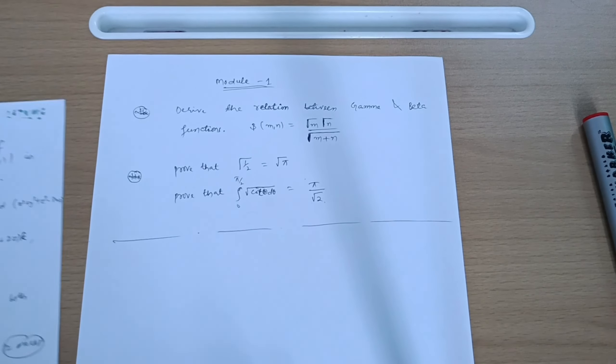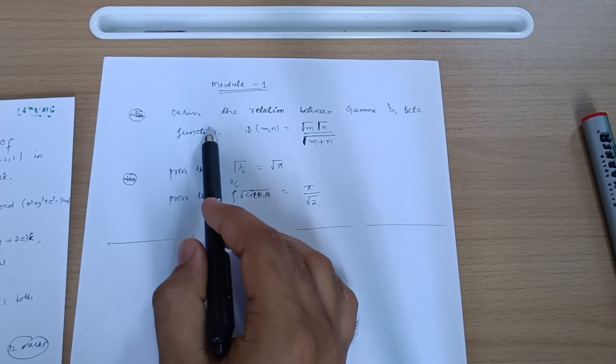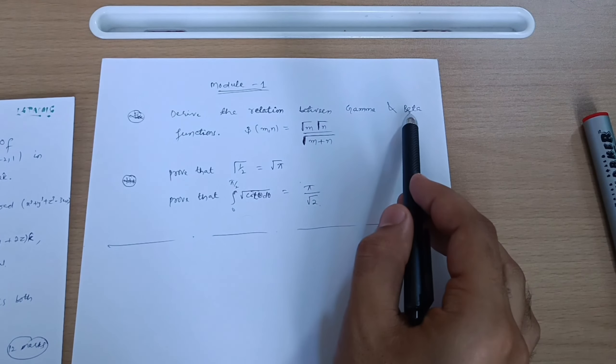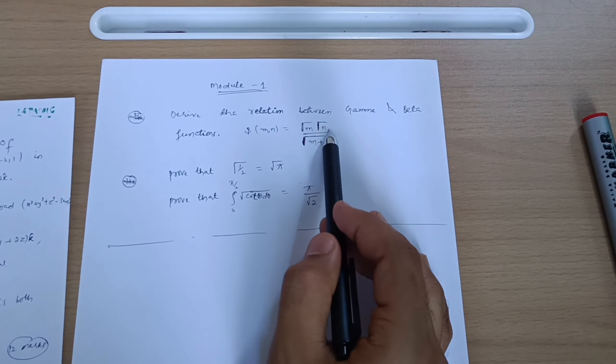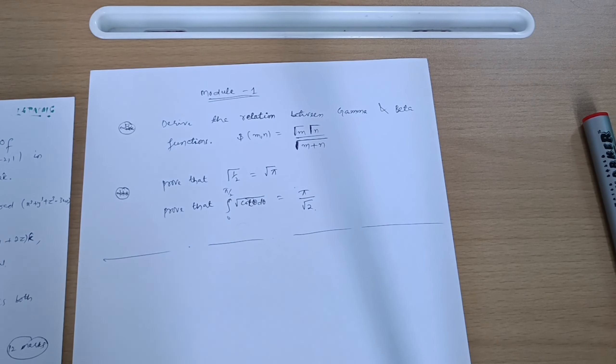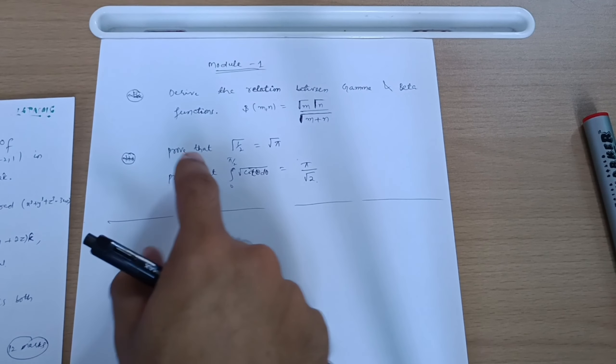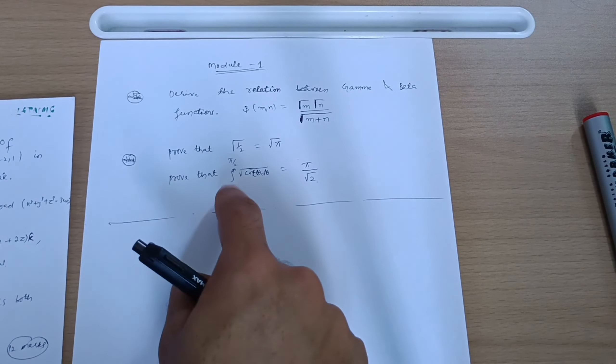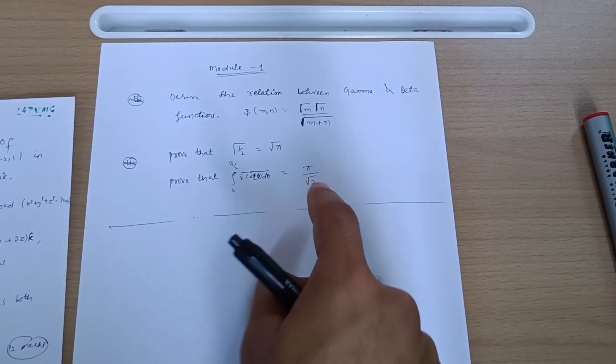Then you have to go through another simple module, that is module second, vector differentiation and vector integration. You have to focus on vector differentiation only so that you can tackle the subject. For example, find the directional derivative of phi equal to x square y z plus 4 x z square at the point (1, -2, 1) in the direction of the vector 2i cap minus j cap minus 2k cap. These are very simpler numericals. I have uploaded videos for it and link will be available in the description.